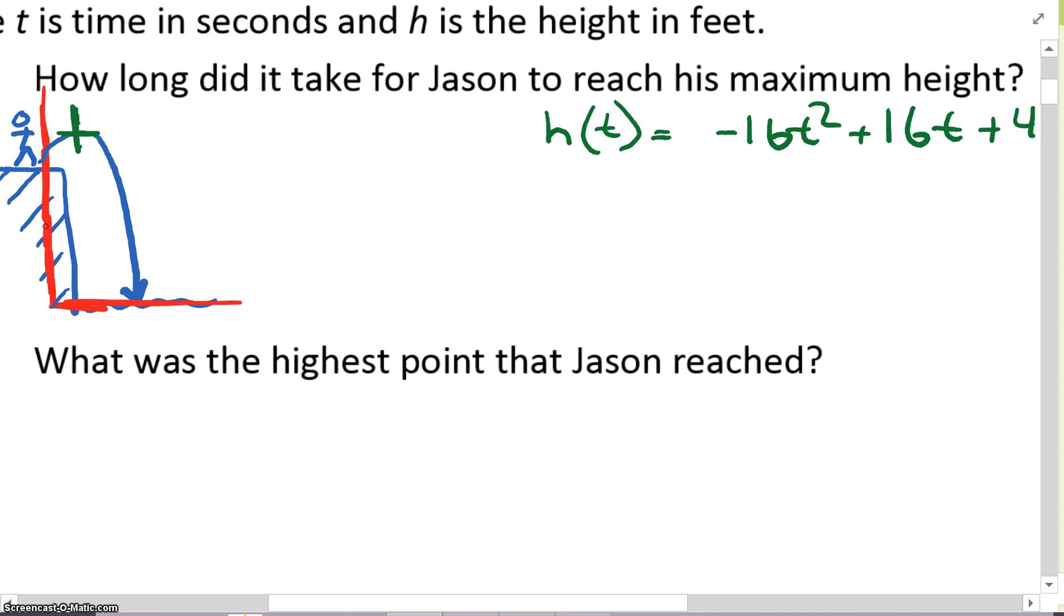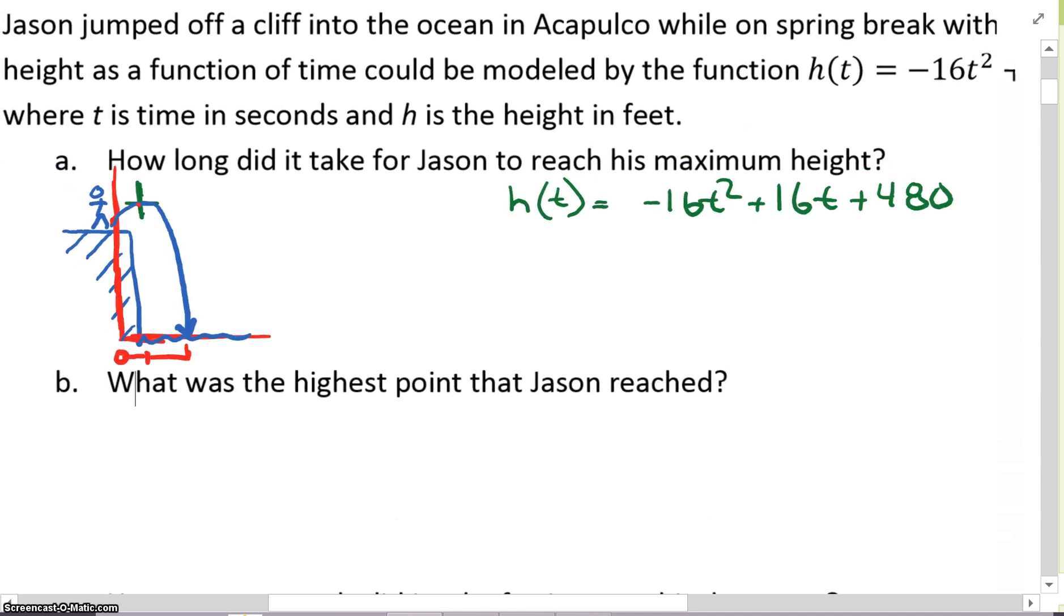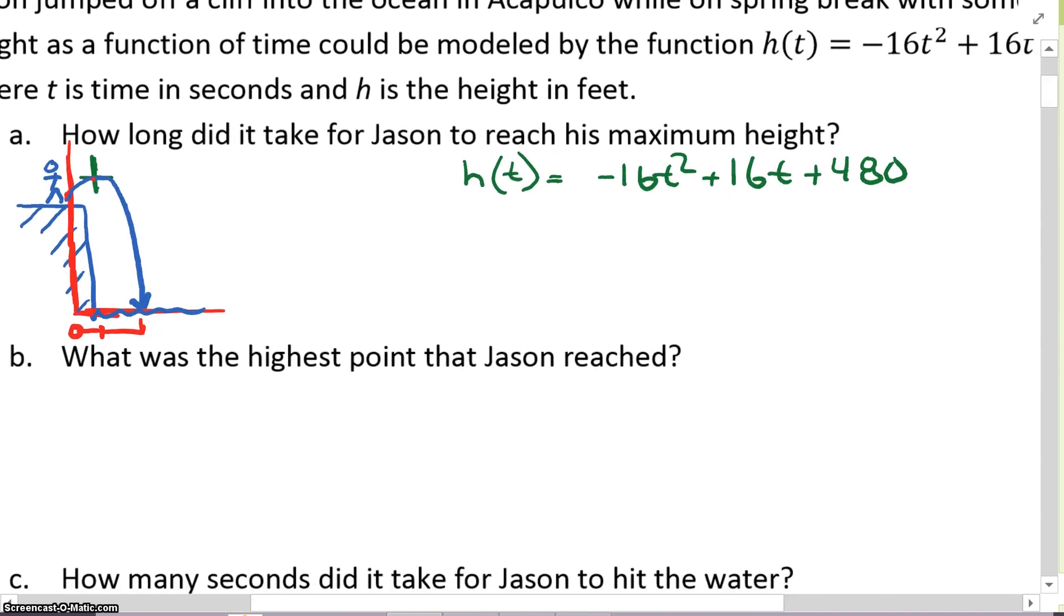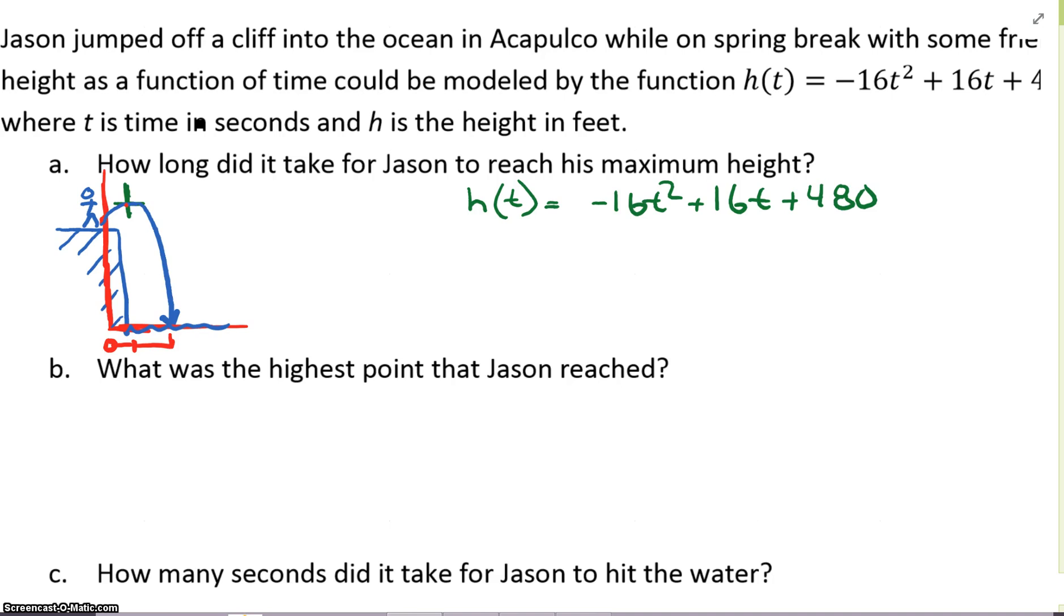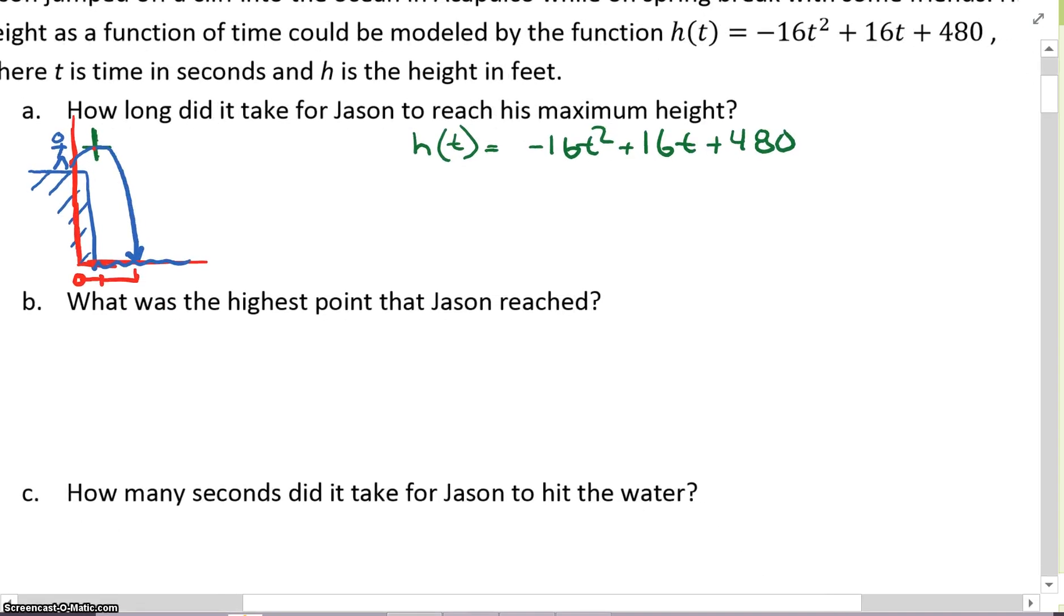We can let the bottom value not be his distance going this way, but the time. So at time 0, he starts here. At a certain amount of time, he's jumped and reached his maximum. And then at a certain amount of time, he's reached the bottom of the water, which we will call the level of 0. So how long did it take for Jason to reach his maximum height? We just got to find the vertex of this equation.